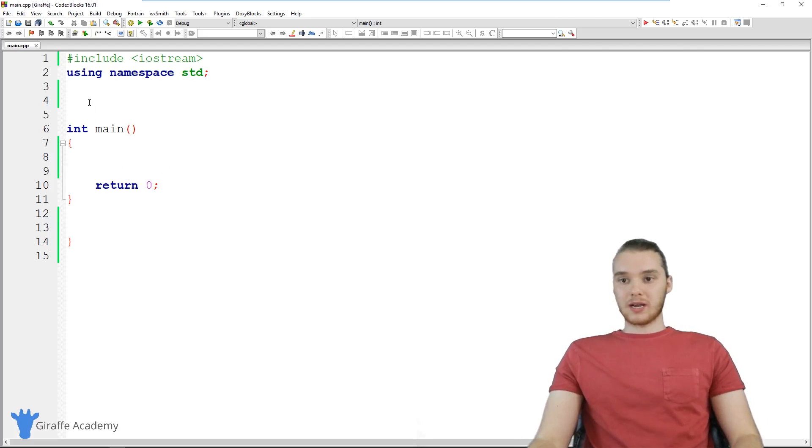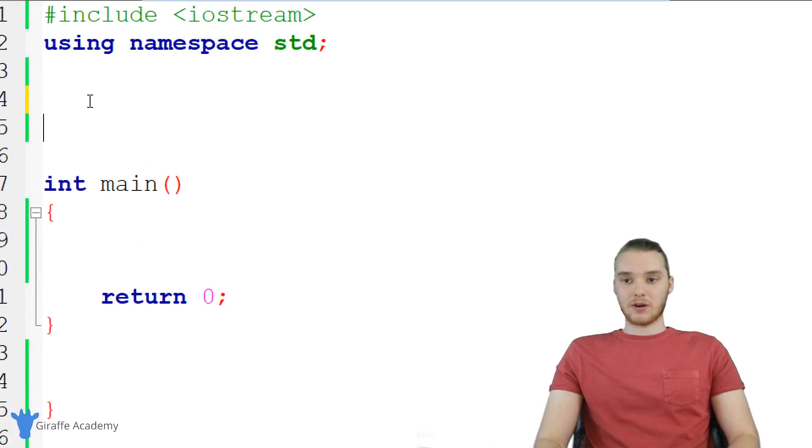So why don't we create a function up here and I actually want to create a function that's going to cube a number. When I cube a number, I'm basically taking it to the third power. So if I was to say, like, two cubed, it's basically just two raised to the third power, or it's just going to be two times two times two, right, that's what cubing a number does. So why don't we create a C++ function that's going to cube a number.